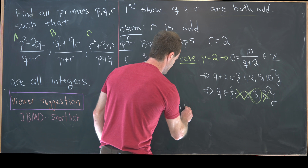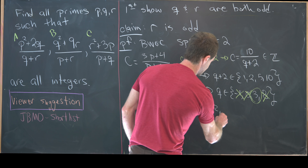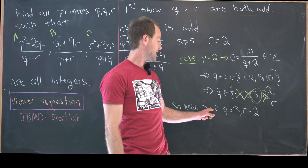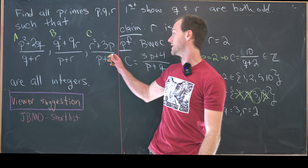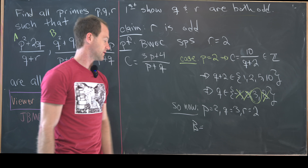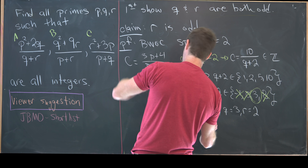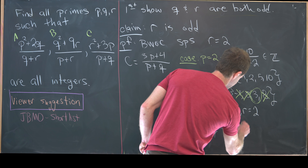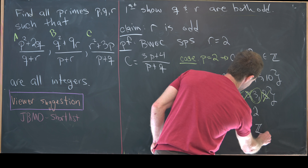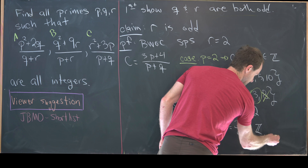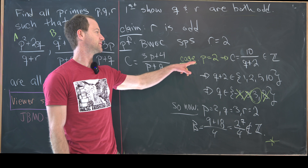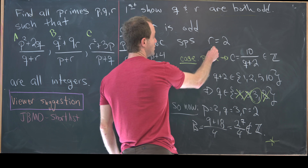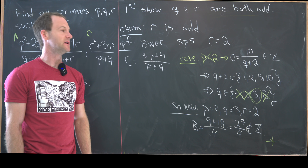So we have p=2, q=3, r=2. But plugging these into expression B gives us 9 plus 18 all over 2 plus 2, which is 27 over 4. That is not an integer, so we've reached a contradiction. We've contradicted this case being possible — it's impossible for p to equal 2.